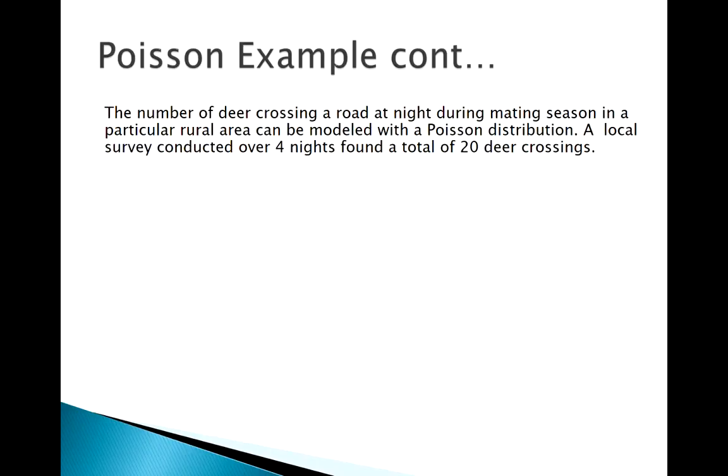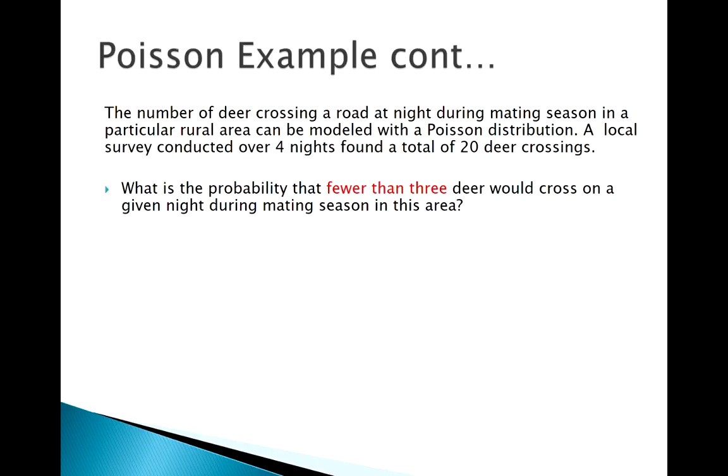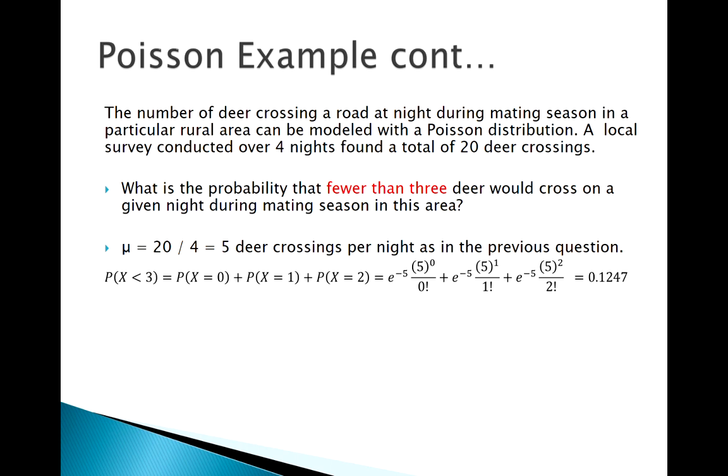Let's continue with this example but ask a different problem: what's the probability that less than three deer would cross on a given night? We know our mean is still the same, mean is five.